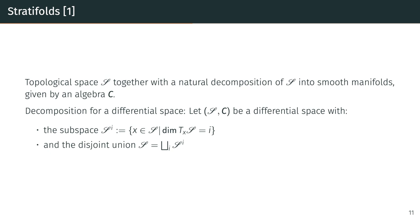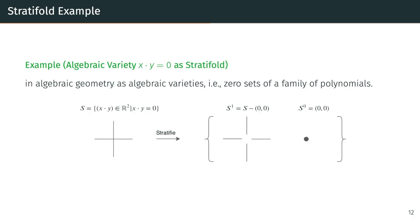For the decomposition, we will consider that each subspace is given by the dimensionality of their respective tangent space, and the stratifold is given by the disjoint union of those subspaces. To get a better intuition of the idea, let's consider an example: an algebraic variety given by x times y equals zero. We can decompose this into a zero-dimensional manifold at the origin and all parts away from the origin.